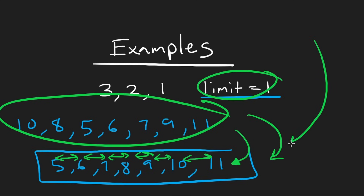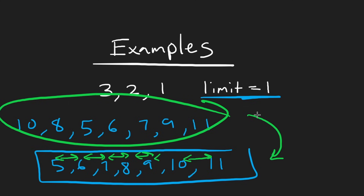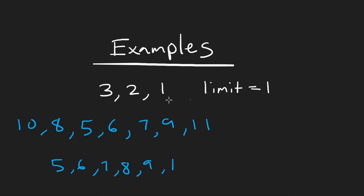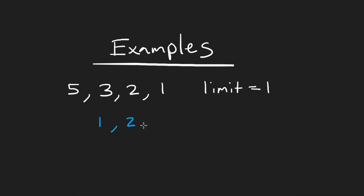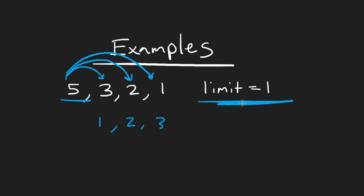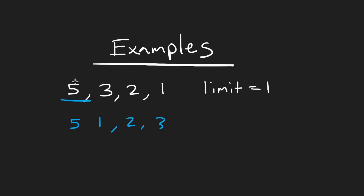Now you might think the solution is easy, but it gets more complicated because we haven't considered what happens when there's a gap that's too big. For example, take elements 1, 2, 3 with a limit of one and add a 5. Five cannot be swapped with any other number — there's no element in the array where the absolute difference is less than or equal to one. So wherever five happens to be, it stays there.